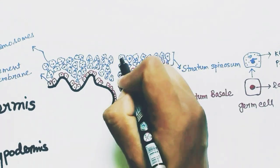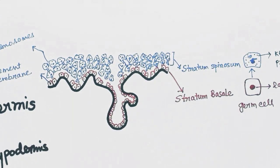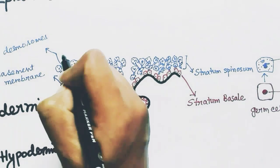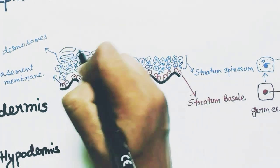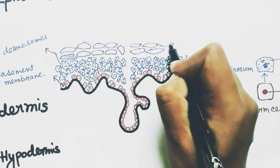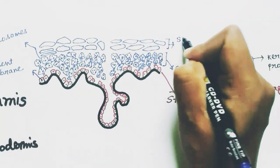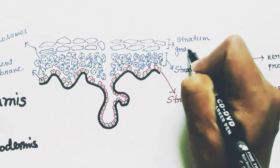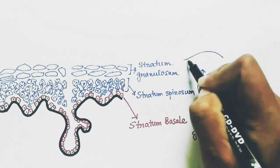These keratinocytes have a prominent nucleus and they are producing keratin proteins inside them. The next layer of keratinocytes are flattened cells because of the upward push — they get flattened. These cell layers are called the stratum granulosum, because they have some granules. These cells are flattened and the nucleus is also flattened.